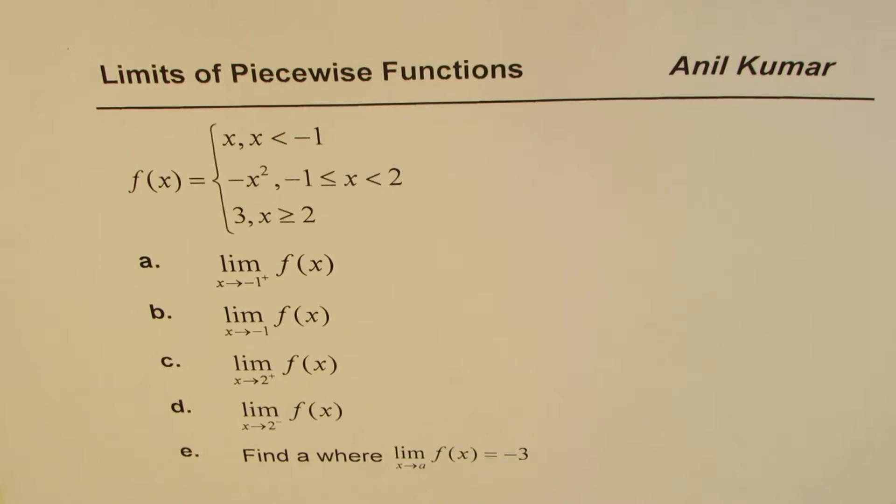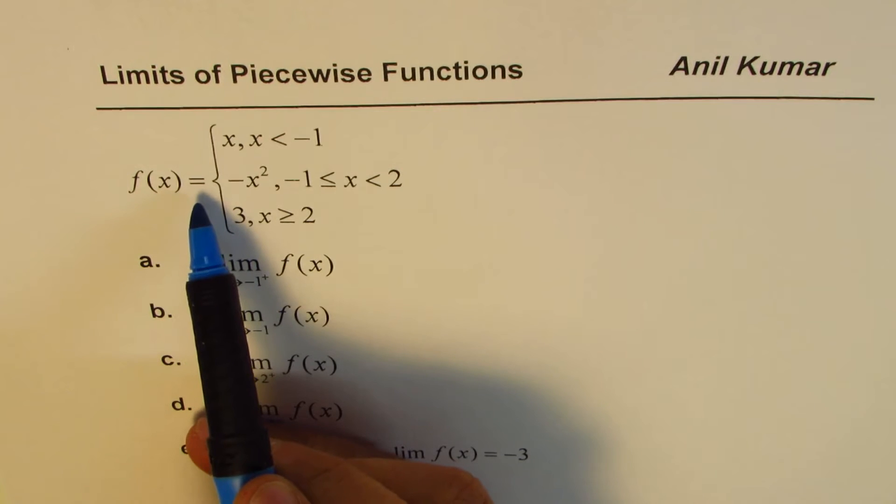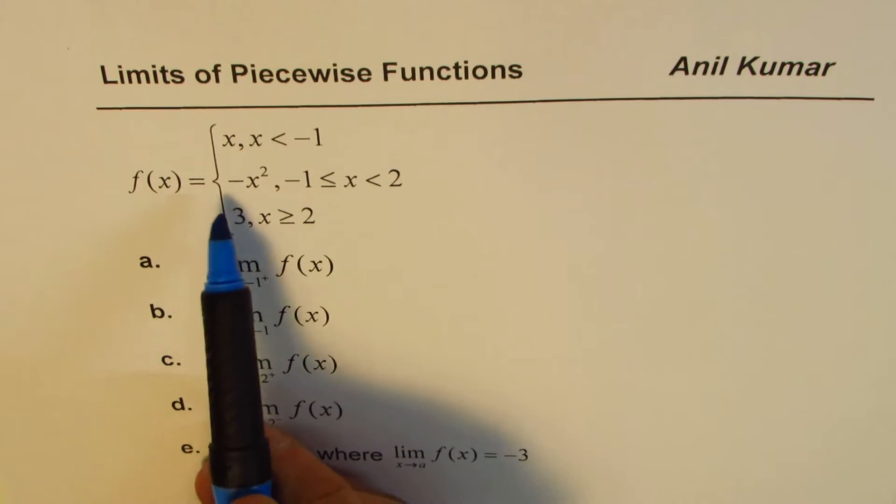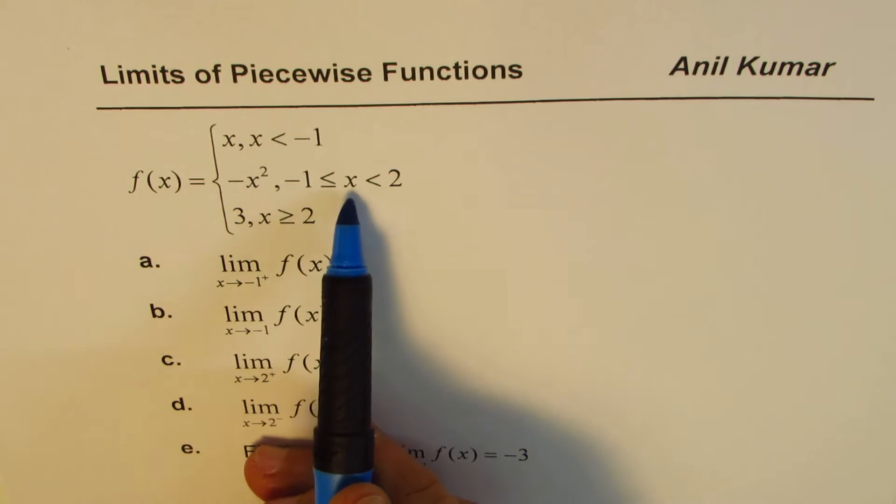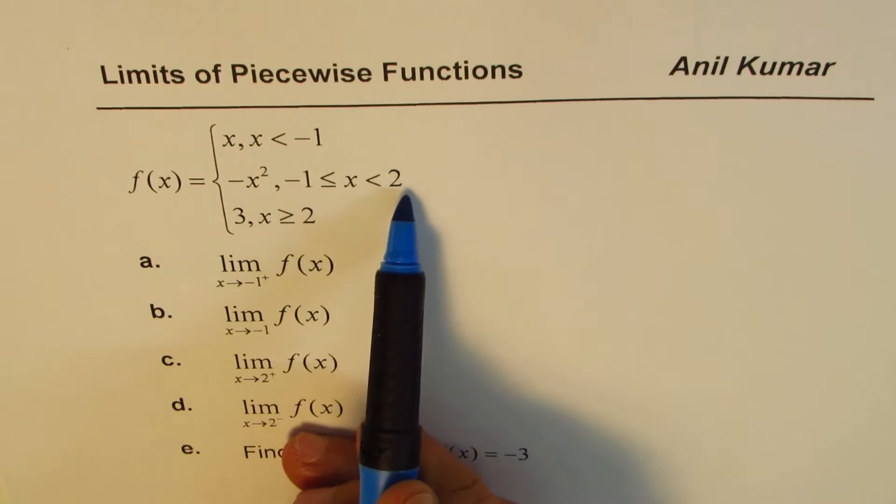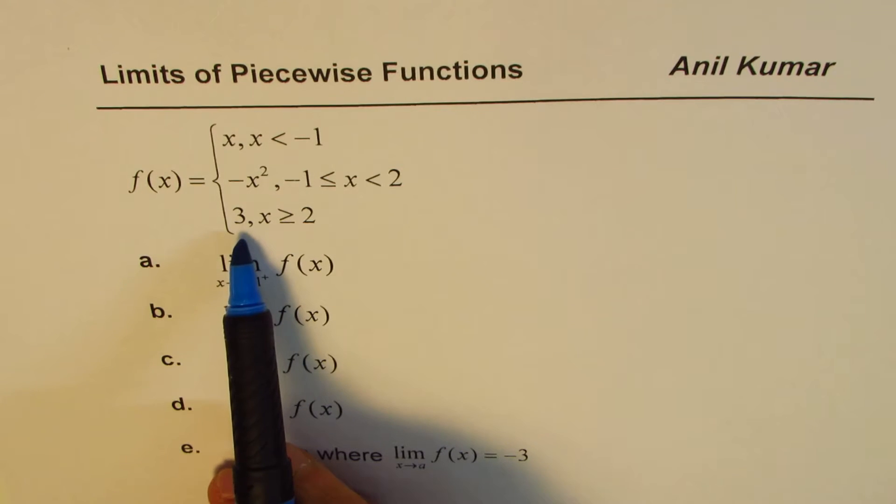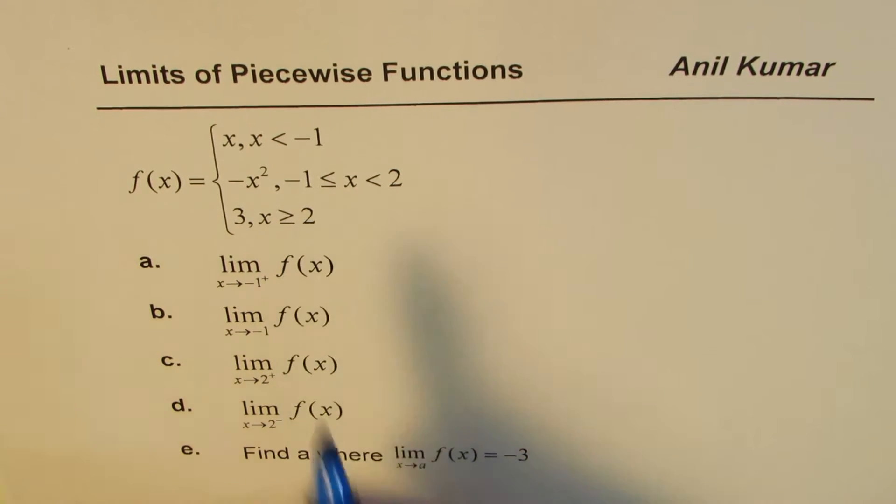The question here is we are given a function f(x) equals x when x is less than -1. It is -x² when x is between -1 and 2, -1 is included, and is equal to 3 when x is greater than or equal to 2.